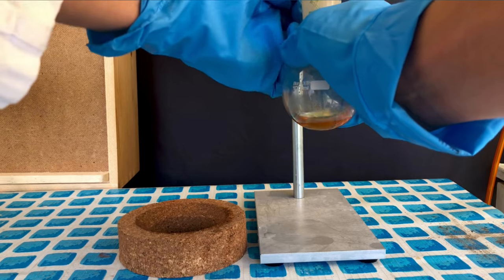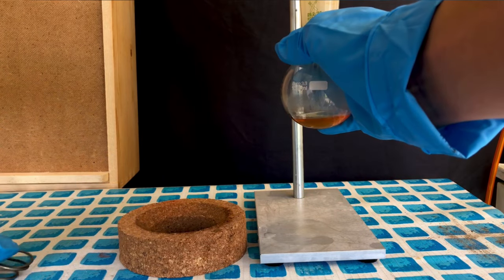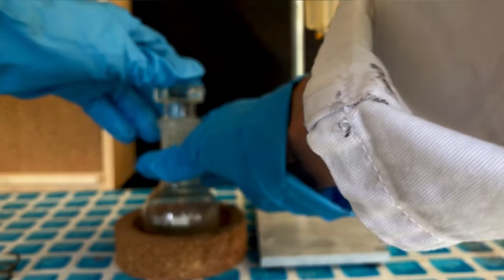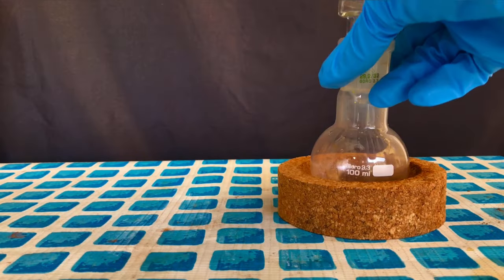The receiving flask was now disconnected, stoppered, and placed on top of a cork ring. You may have already noticed that the product is slightly discolored, while it should actually be perfectly clear.